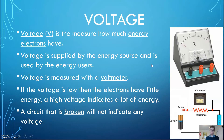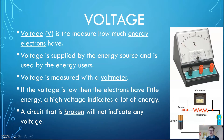Voltage, like I said before, is how much energy the electrons have. It's measured with a voltmeter. Current electricity needs a circuit, so as soon as that circuit is broken, this voltmeter is not going to indicate any more voltage because the current isn't going to pass through. You can still have volts in static electricity, though, but a voltmeter doesn't measure static electricity.